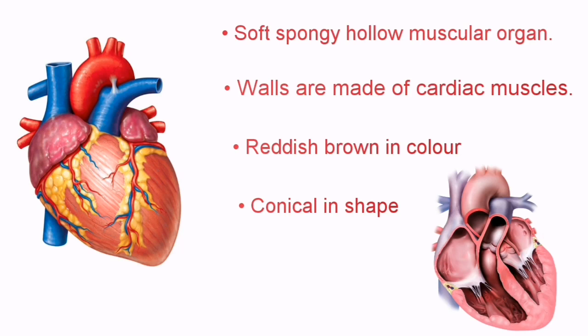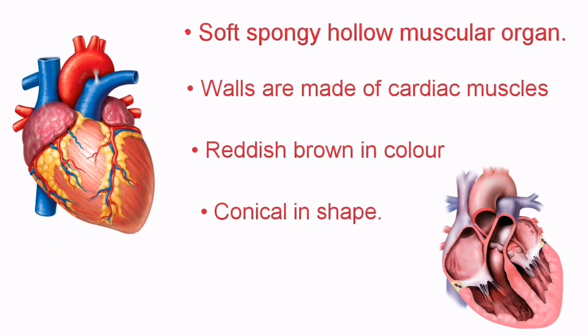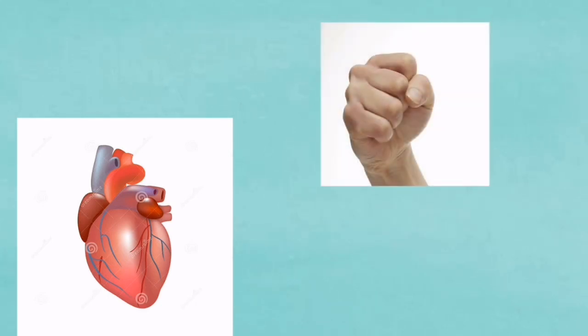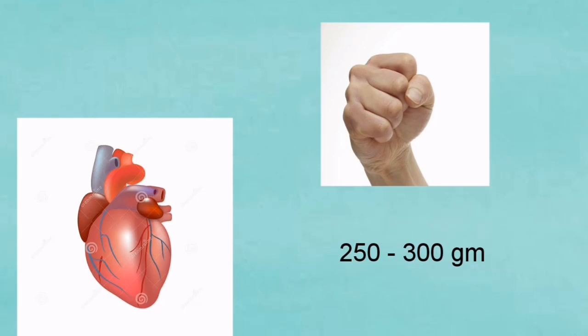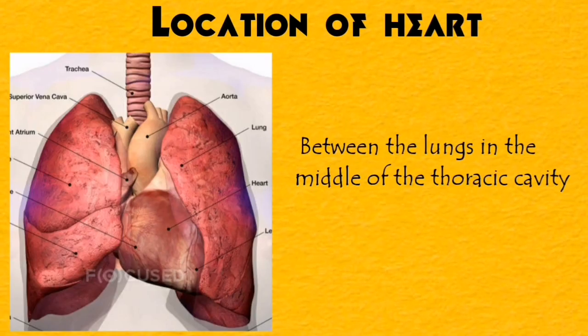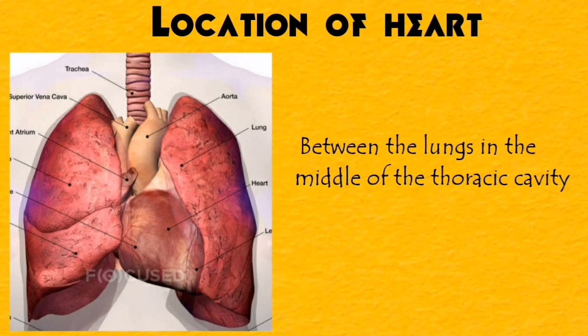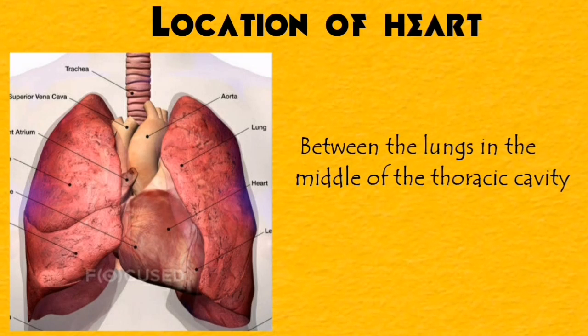The walls of the heart are made up of cardiac muscles, as you studied last year. You can see the color of the heart in this picture — it is reddish-brown in color and conical in shape. The size of our heart is about the size of our clenched fist, with an average weight of about 250 to 300 grams. The heart is located between the two lungs in the middle of the thoracic cavity, in a cardiac notch.